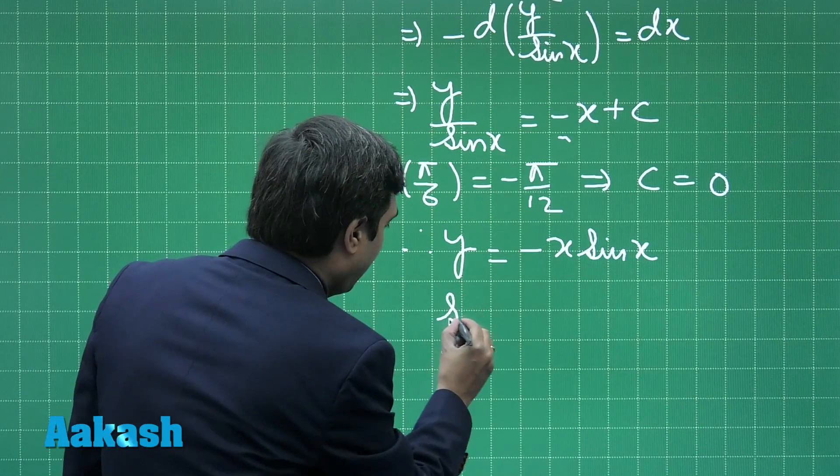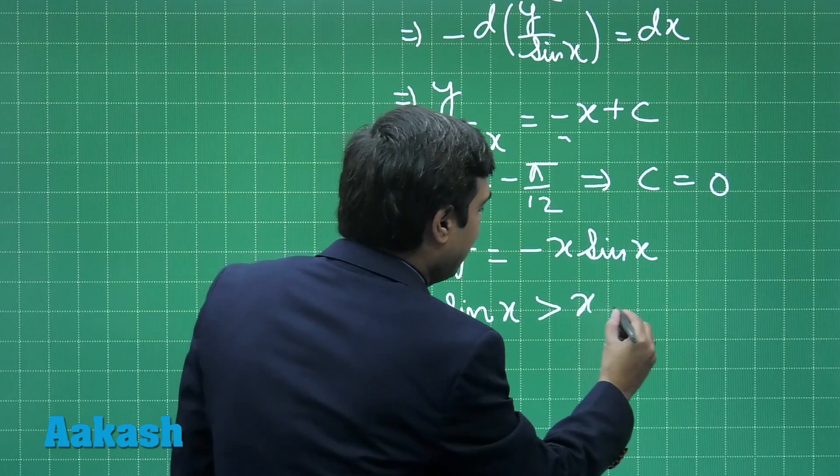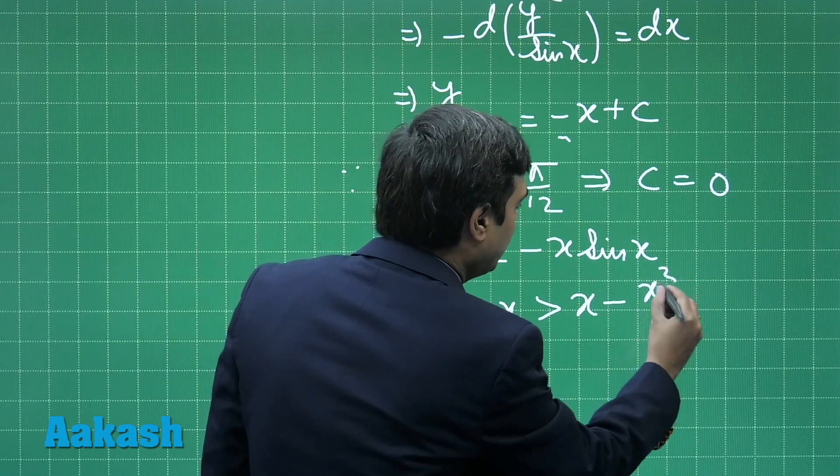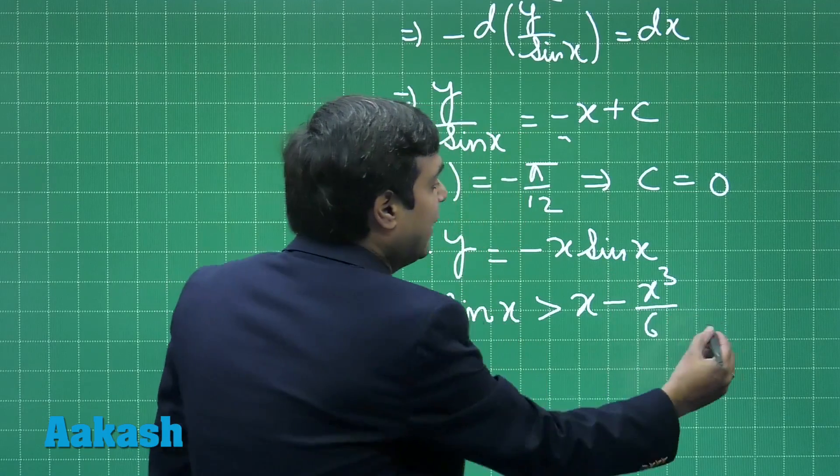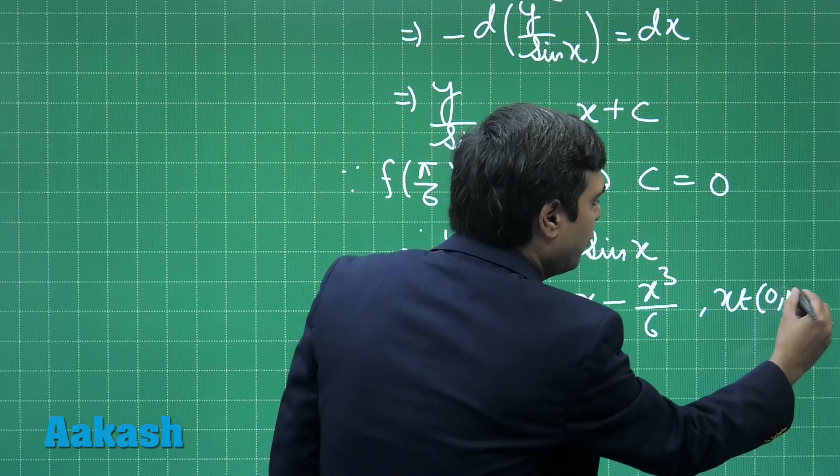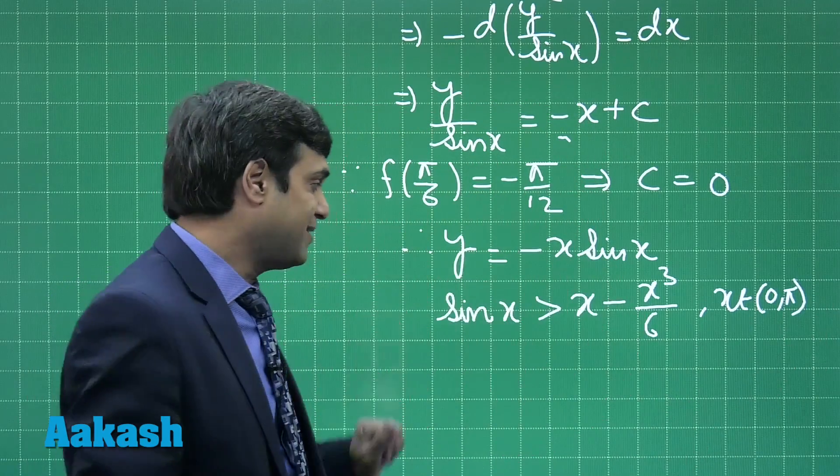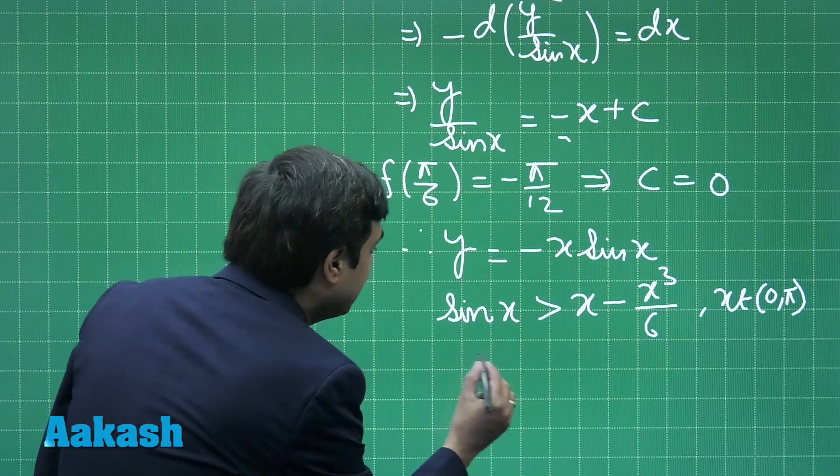Now the second one: f(x) < x⁴/6 - x². Since we know that sin x > x - x³/6 in the interval as given to this question, particularly (0, π), we can take sin x > x - x³/6.